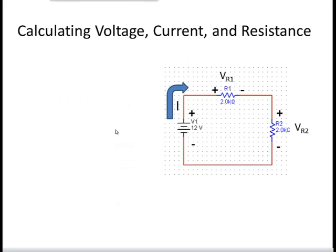Let's start off by calculating the voltage, current, and resistance. Here's our circuit, and what I'd like to point out is that the total voltage is simply going to be the battery voltage. The same current, I, is going to flow through both R1 and R2. It's going to be the same current because there's only one path for the current to take in this simple series circuit — from the positive terminal of the battery, through the two resistors, and back around to the negative terminal of the battery.